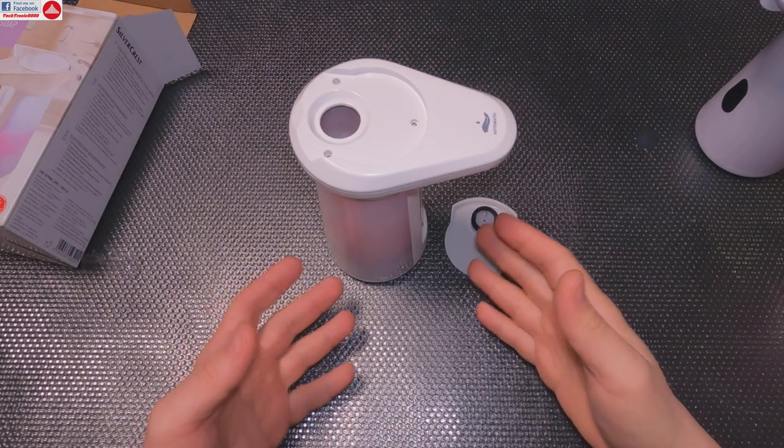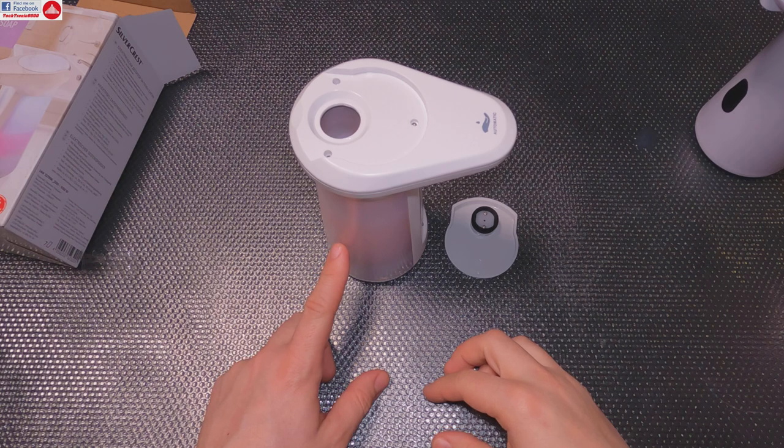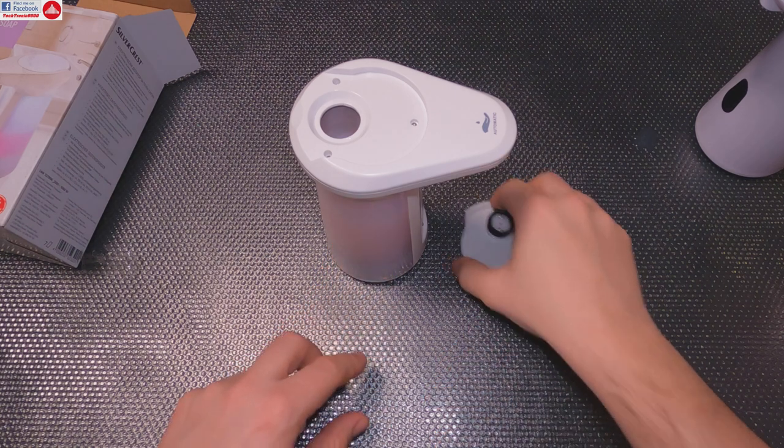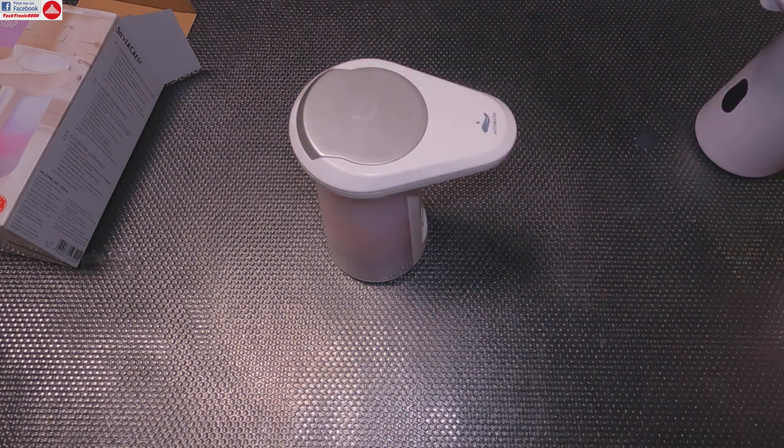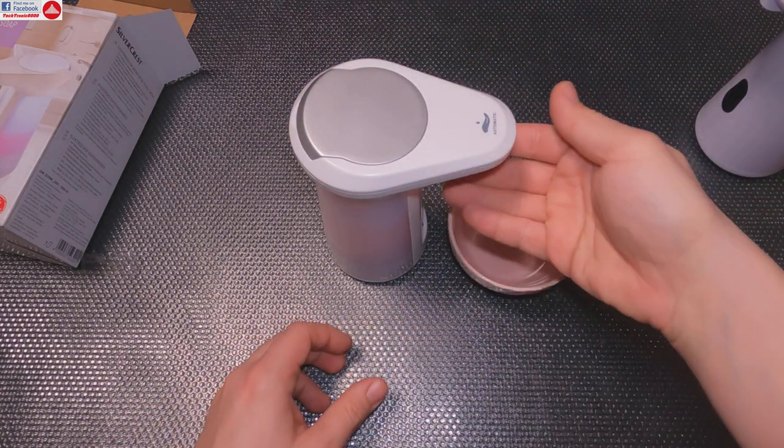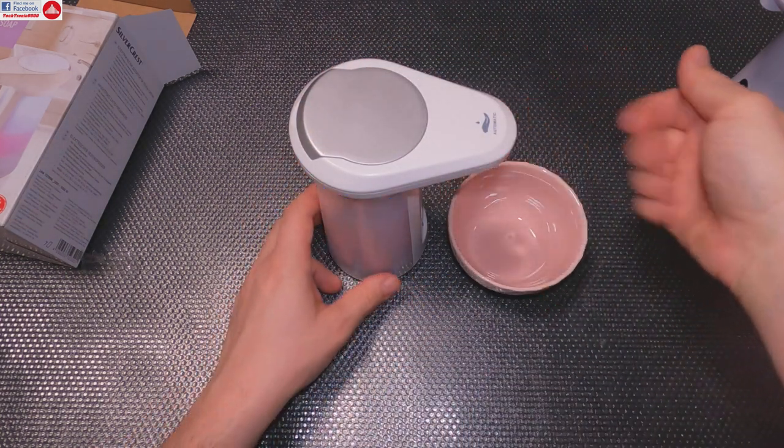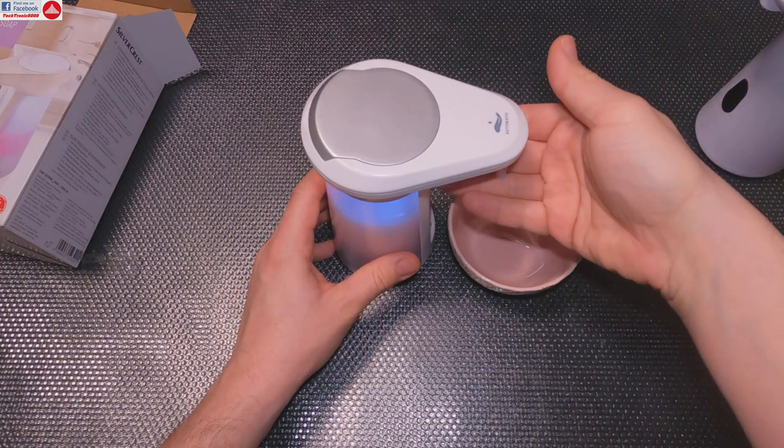In case you are wondering about the capacity, this one takes about 330 milliliters of liquid soap. All right, and now let's prime it. I'm going to activate it a few times, and there you go, it's working already.